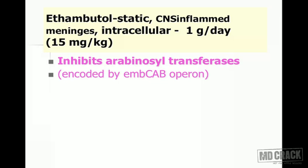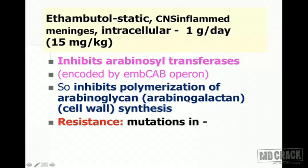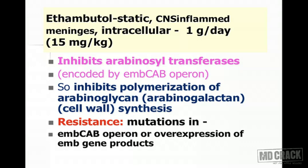The mechanism of action of ethambutol is inhibition of arabinosyltransferases, encoded by the embCAB operon. When arabinosyltransferase is inhibited, polymerization of arabinogalactan is inhibited — a substance required for mycobacterial cell wall synthesis. Resistance is produced by mutations in the embCAB operon or over-expression of the EMB gene product.